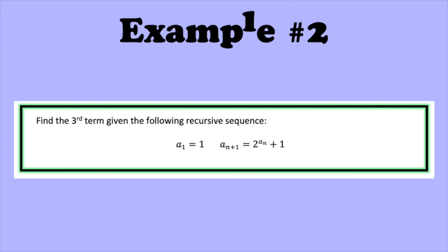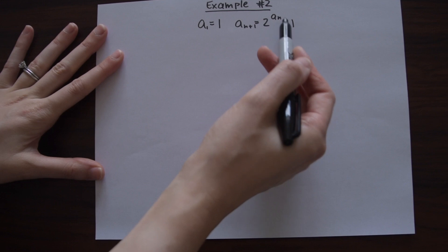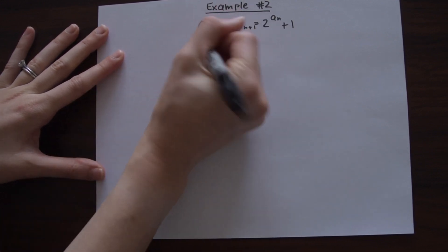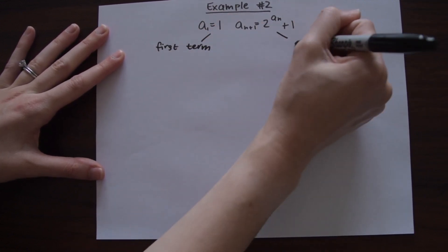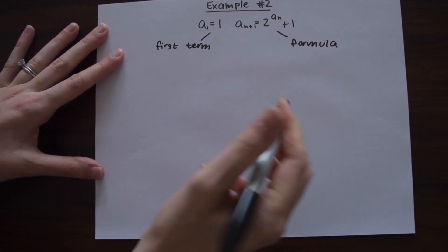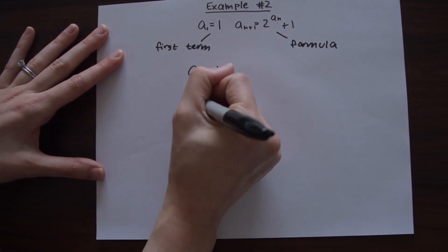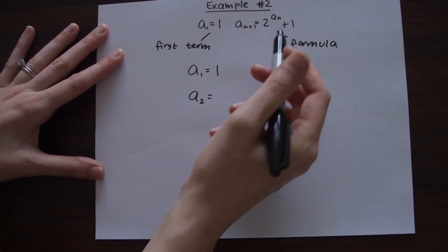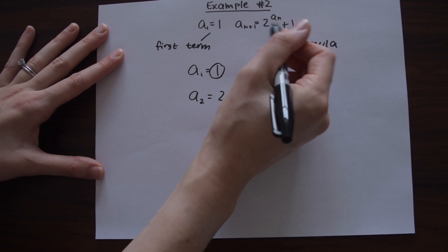This time we need to find the third term. We're given a sub one equals one, and our formula is a sub n plus one equals 2 raised to the power of a sub n, plus one. Notice this is a little different because the exponent this time is our a sub n. We know the first term is one, and this is the formula we'll apply.